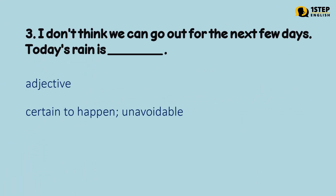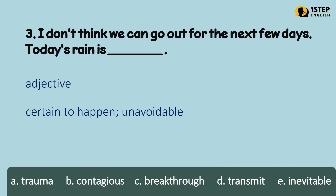Number 3: I don't think we can go out for the next few days. Today's rain is ___. An adjective meaning certain to happen; unavoidable. Letter A: trauma. Letter B: contagious. Letter C: breakthrough. Letter D: transmit. Letter E: inevitable. The correct answer is Letter E — today's rain is inevitable.